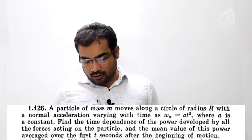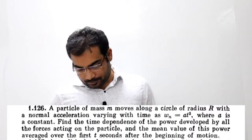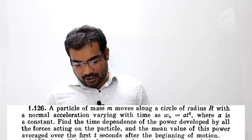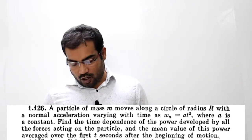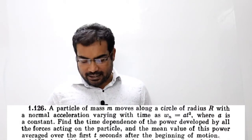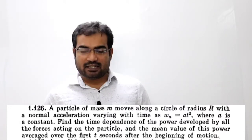A particle of mass M moves along a circle of radius capital R with normal acceleration varying with time. Aur acceleration ka equation diya hua hai A T squared, where A is a constant.